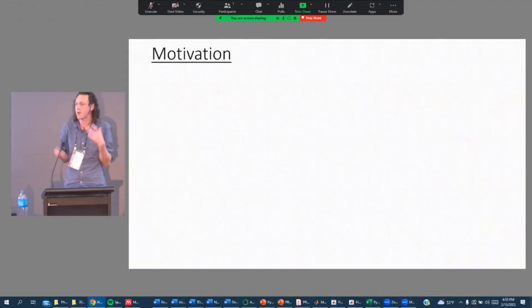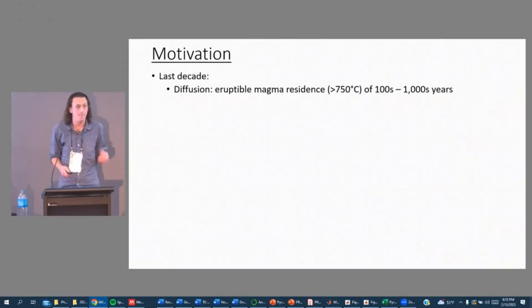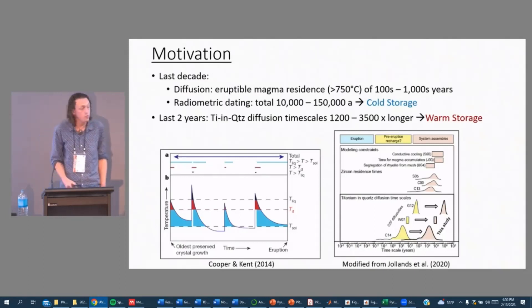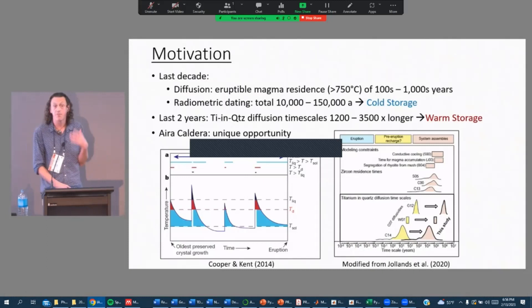In the last decade there's been this paradigm shift in the way that we think about magmatic timescales. Diffusion studies have shown that eruptable magma is more of an ephemeral feature and instead is generally stored in cold storage. That means the timescales needed to amass hundreds to thousands of cubic kilometers of magma can be hundreds to thousands of years, not tens of thousands of years or more. However, in the last two years there have been two brand new studies that have looked at titanium in quartz diffusion diffusivity coefficient, and that would suggest timescales that are 1200 to 3500 times longer than previous authors have suggested, and that would require warm storage. So it turns out that Aira Caldera provides a unique opportunity to assess these timescales.